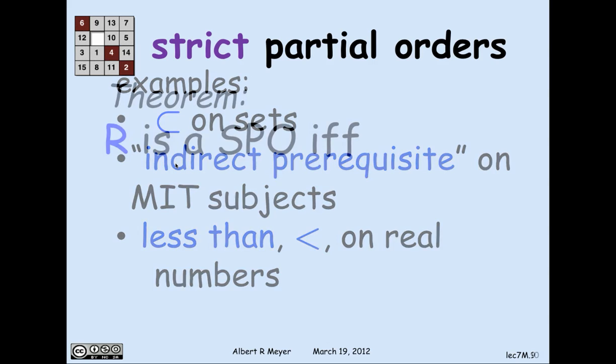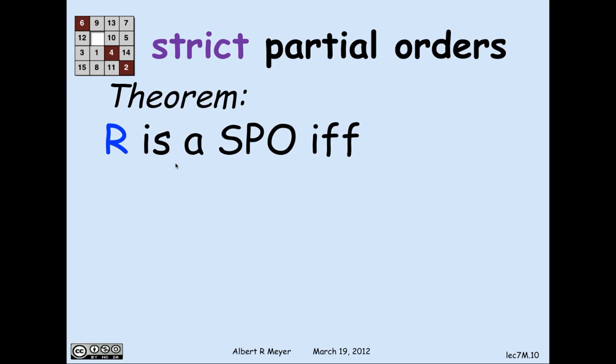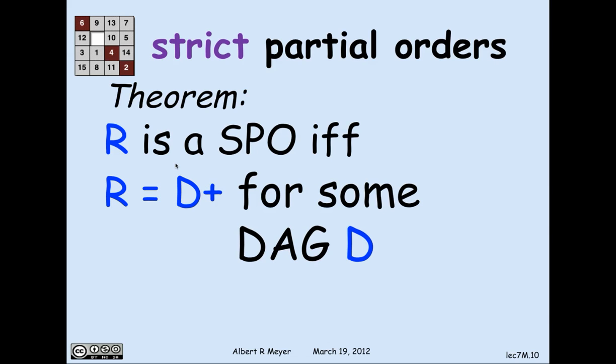Putting the previous reasoning together, a relation r is a strict partial order if and only if r is the positive path relation for some DAG d. The axioms that define strict partial order — namely transitivity and asymmetry — abstractly capture the property of a relation that it comes from a DAG.